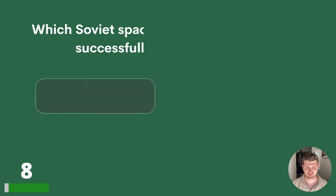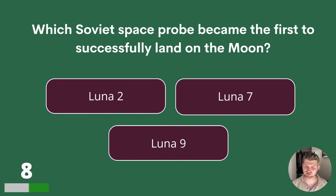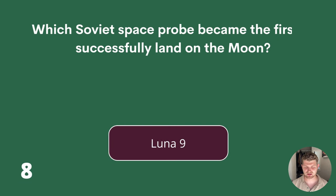Question 8. Which Soviet space probe became the first to successfully land on the Moon? Luna 2, Luna 7 or Luna 9? The answer is Luna 9.